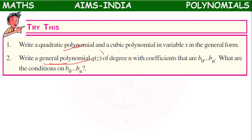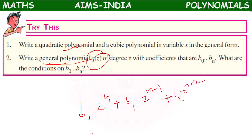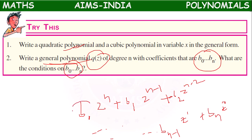Write a general polynomial of degree n in variable z. P(z) equals b₀z to the power n plus b₁z to the power n minus 1 plus b₂z to the power n minus 2, and so on, up to bₙ₋₁ times z plus bₙ (the constant term). The condition is that the coefficients b₀ through bₙ must all belong to real numbers.